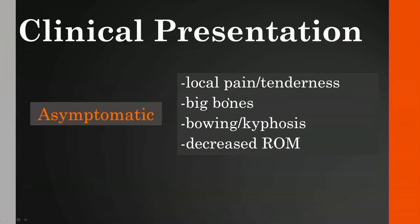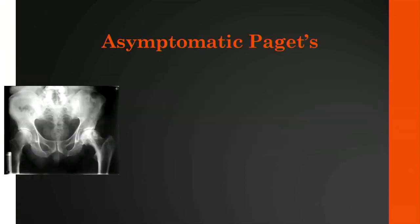The clinical presentation is variable, ranging from completely asymptomatic to localized pain and tenderness, big bones and bowing deformities, kyphosis if the spine is affected, and decreased range of motion. Here's a patient with asymptomatic Paget's—a radiograph of the pelvis for right hip pain—where Paget's disease is affecting the left hip with cortical and trabecular thickening and slight expansion of the bone compared to the right side.